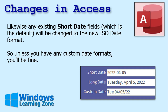How does this affect Microsoft Access? Likewise, any existing short date fields — which is the default date format in Access — will be changed to the new ISO date. So unless you have custom date formats, you'll be fine. My short dates got changed to the ISO format, my long dates look fine as they are, and a field where I had a custom date format kept the old month-day-year format. Custom formats won't change; standard short dates will change automatically.